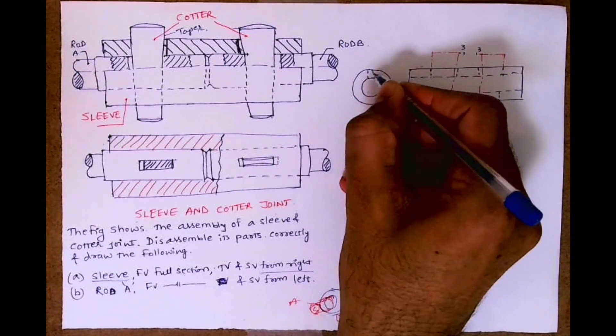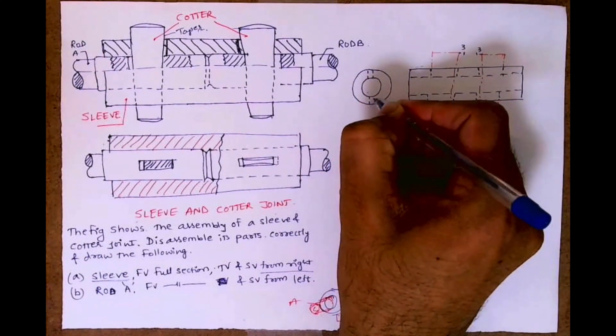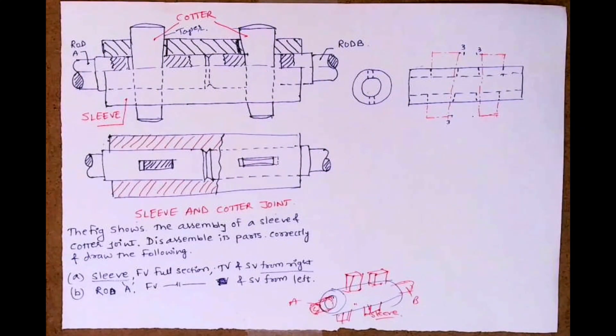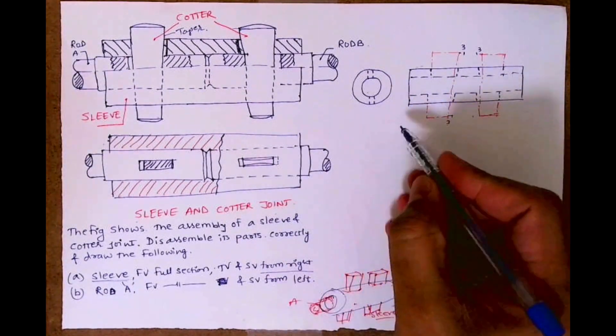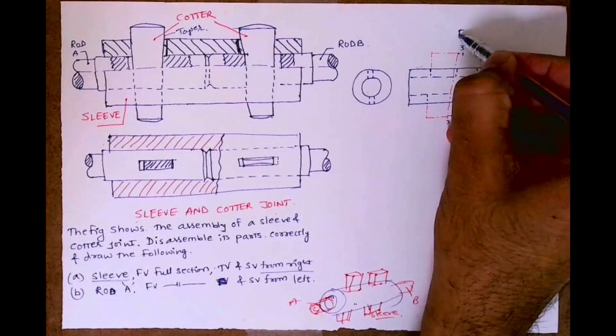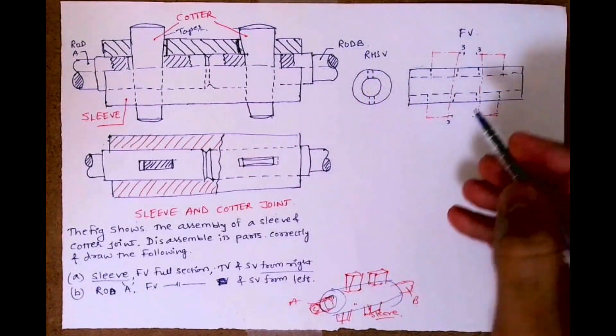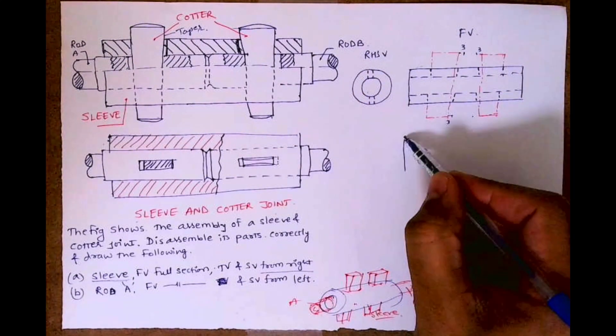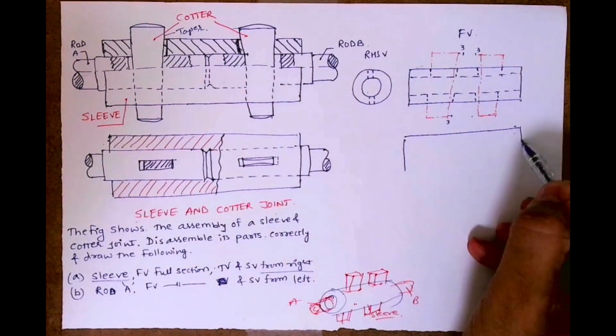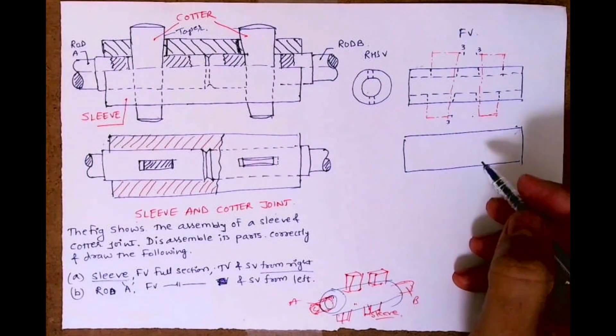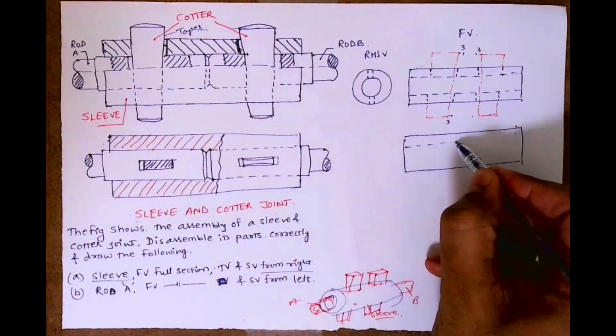And inside view, it will be dotted like this. This is front view, this is right-hand side view, and this is top view. This is dotted.